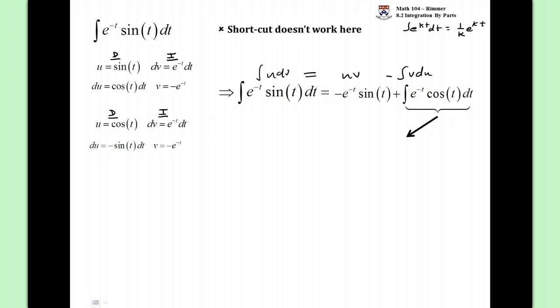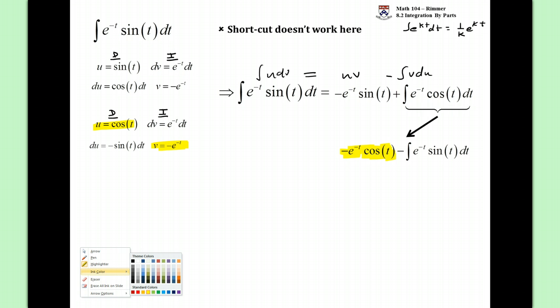We multiply u times v. So, here's the cosine t and the e to the negative t with the negative on it. That's this part. And then we minus the integral of the v times du. Now, watch this now. There are one, two, three minuses. When we go to set up the integration by parts formula the second time through, this is our u, v. And then minus the integral of v, d, u.